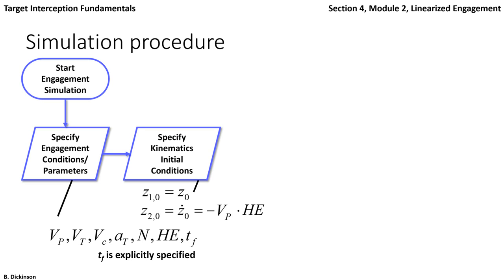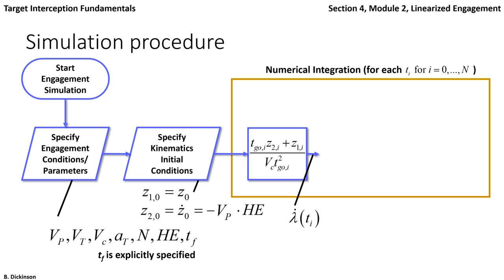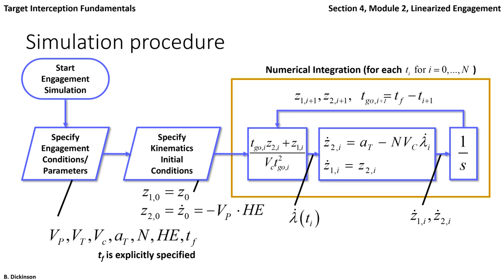Now that we have those initial kinematic conditions, we enter the numerical integration routine. The first step is to compute line-of-sight rate at the current time step, which is input into the kinematic equations containing parameters AT, N, and VC. We determine relative velocity and relative acceleration of the pursuer and target at the current time step, integrate forward in time to get relative position and velocity at the next time step TI+1, and update time-to-go as final time minus TI+1. This integration continues until we reach the final time, or time-to-go equals zero, at which point we record missed distance.